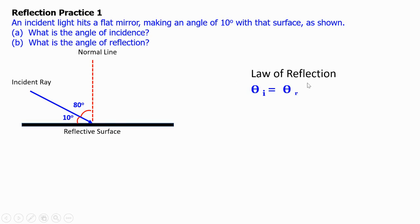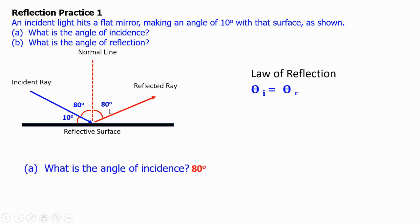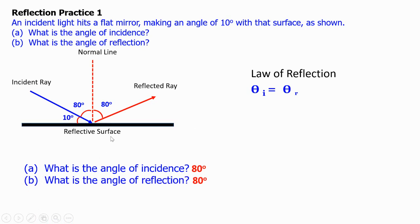The law of reflection states that the angle of incidence and the reflected angle are the same. This is the reflected ray and the angle of reflection is 80 degrees. To answer the questions: the angle of incidence is 80 degrees, and the angle of reflection is also 80 degrees.